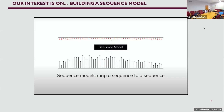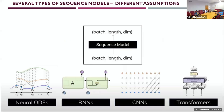We are interested in building sequence models — essentially a black box that takes a sequence as input and returns a sequence of the same shape or a variation of it, which is a sequence-to-sequence architecture. In the deep learning community there are different types of models that perform this task, each built with a different assumption in mind.